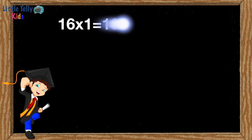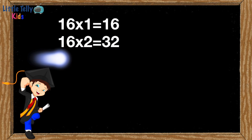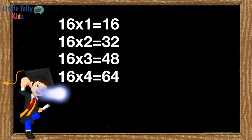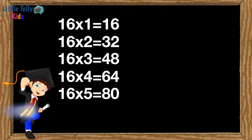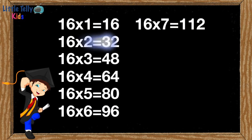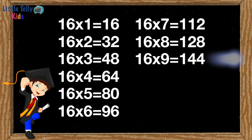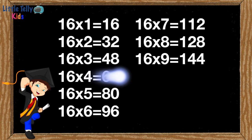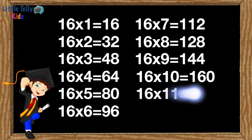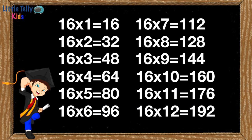16 ones are 16, 16 twos are 32, 16 threes are 48, 16 fours are 64, 16 fives are 80, 16 sixes are 96, 16 sevens are 112, 16 eights are 128, 16 nines are 144, 16 tens are 160, 16 elevens are 176, 16 twelves are 192.